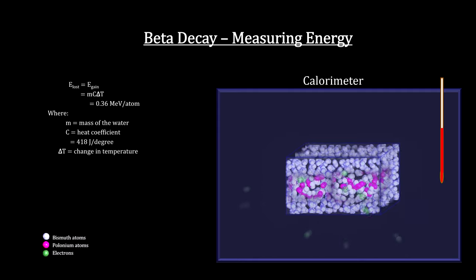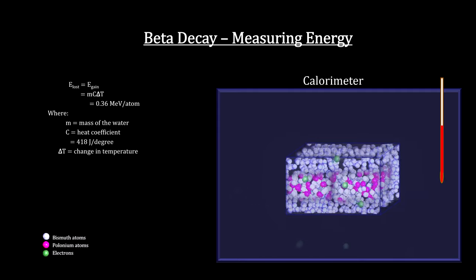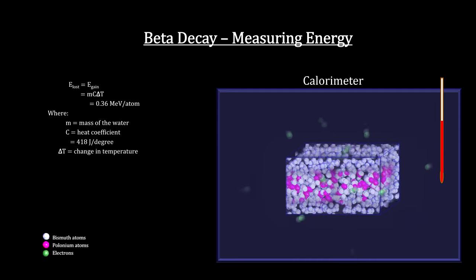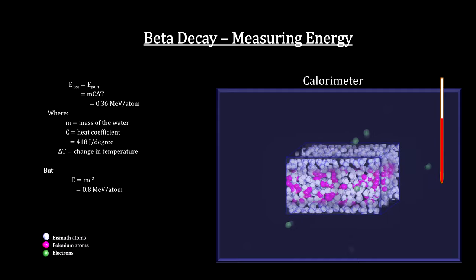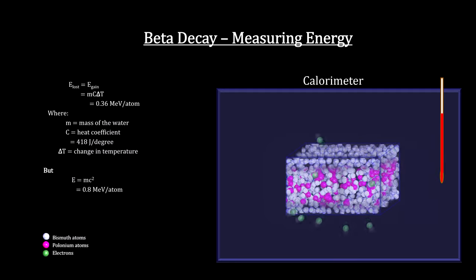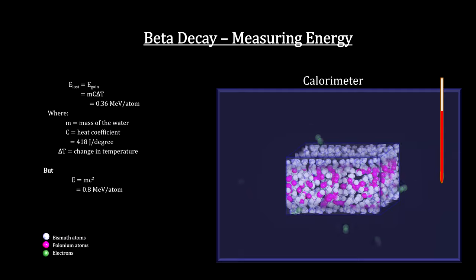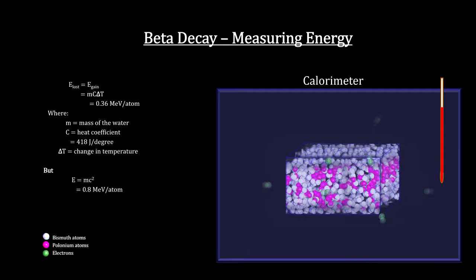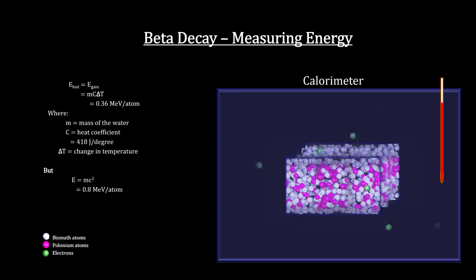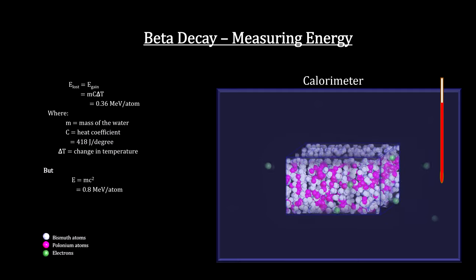The results showed that each bismuth atom naturally emits 0.36 million electron volts. But here we had a significant discrepancy. Conservation of energy and Einstein's equations called for 0.8 million electron volts. That's more than twice as much as was measured. This was a real problem.